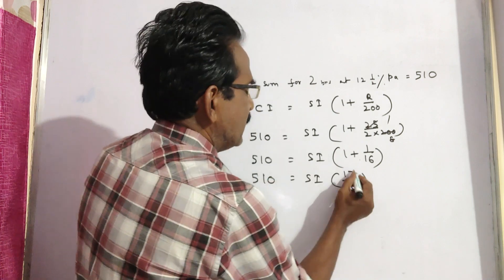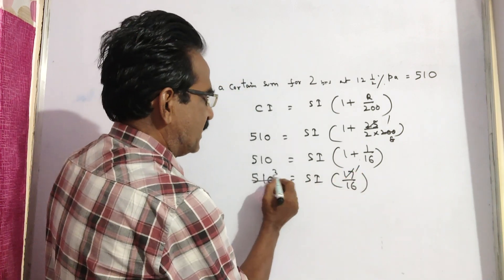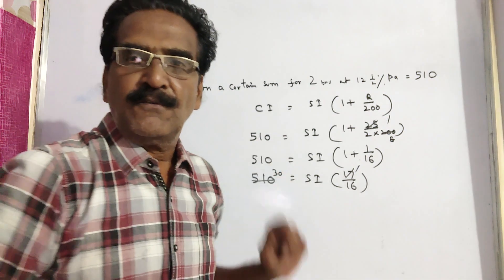510 divided by 17 gives 30, then 30 into 16 gives 480.